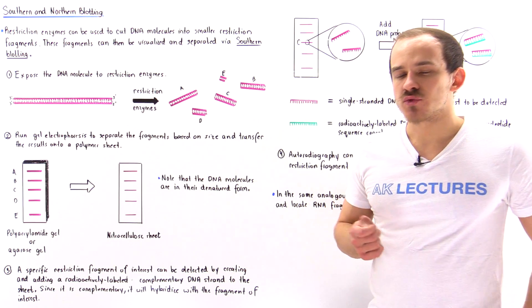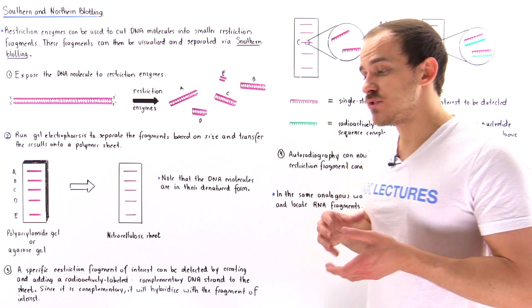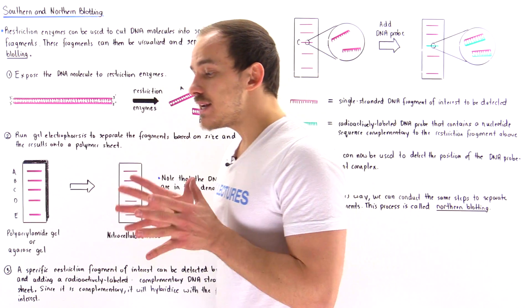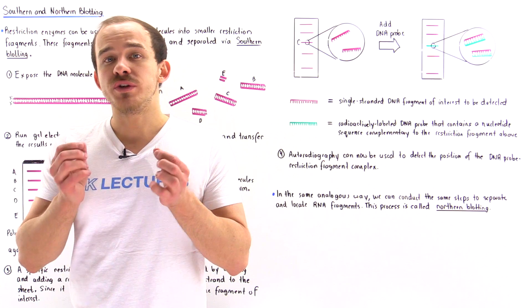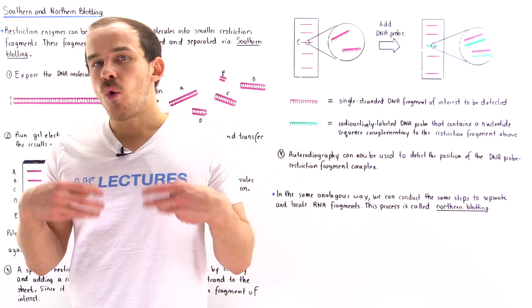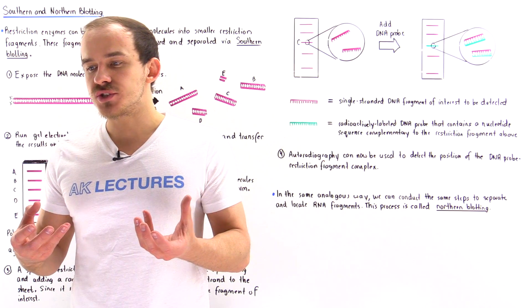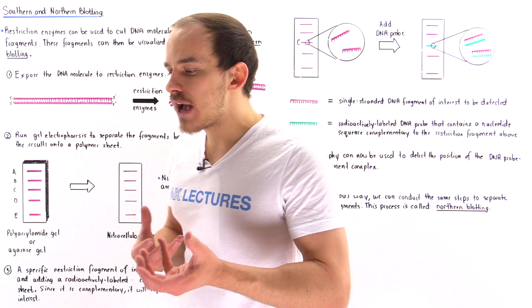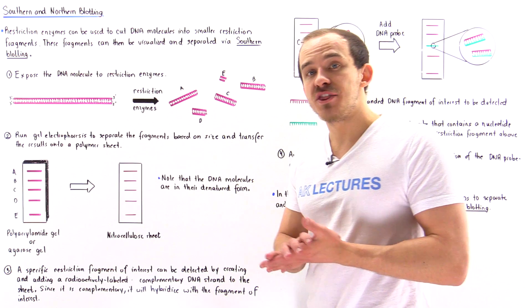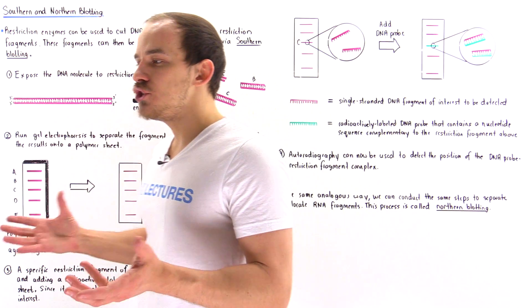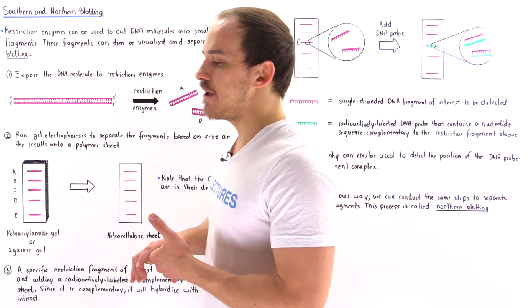Previously we discussed restriction enzymes and we said we can use these restriction enzymes to cut our DNA molecule into smaller fragments known as restriction fragments. Once we have these DNA restriction fragments we can study them, analyze them, manipulate them, amplify them to make many copies, and do all sorts of different things with these DNA fragments.